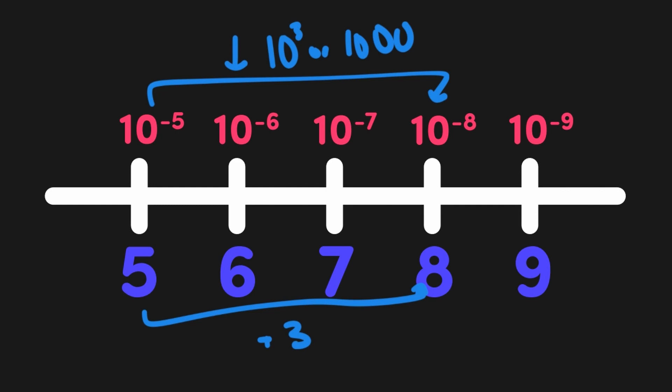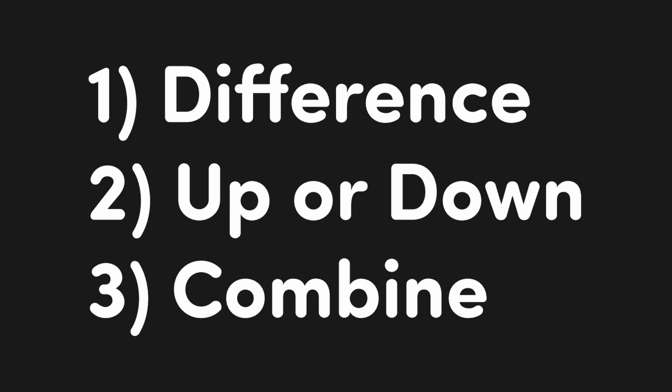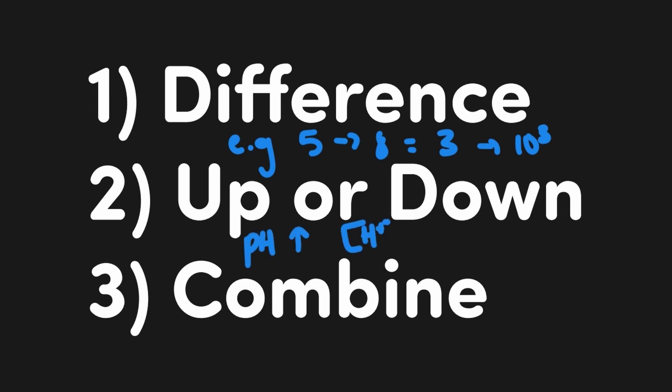This is a question type you might encounter frequently on the MCAT, where you're asked to convert between these different scales and how a change in one might affect the other. Regardless of how the question is phrased, we can follow three steps. One: determine the difference between the starting and ending values in either units or factors of 10, depending on how the question is set up, then convert this into the other scale, keeping in mind that there is one unit change per factor-of-10 change. Two: determine whether the value you're evaluating is going to go up or down — this tells us whether the exponent change is negative or positive and whether you'll be shifting up or down on the p-scale. Lastly, combine the two pieces of information to get the correct answer.